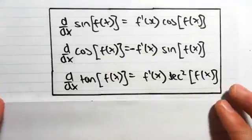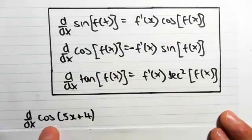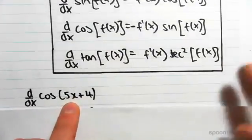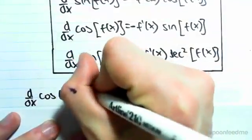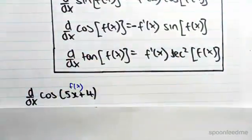So just to look at some examples, d/dx of cos(5x + 4). You can see that f(x), the function of x we have, is 5x + 4.